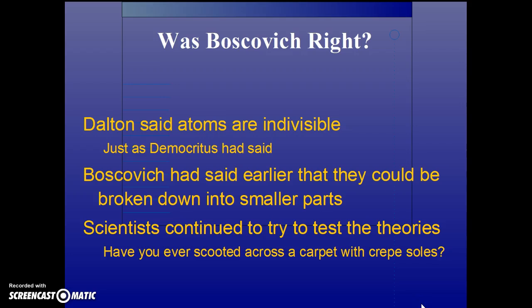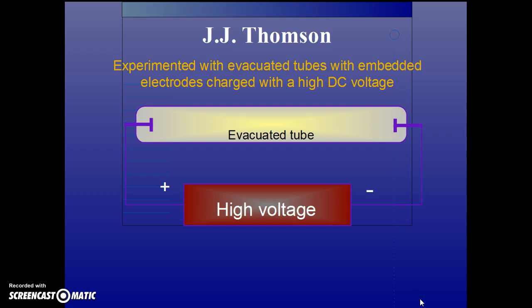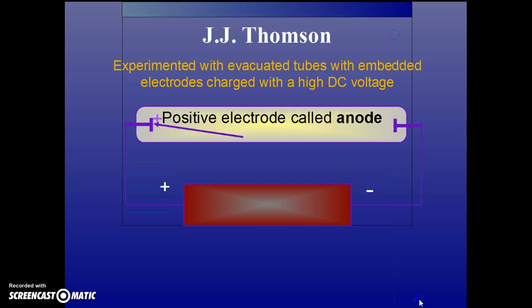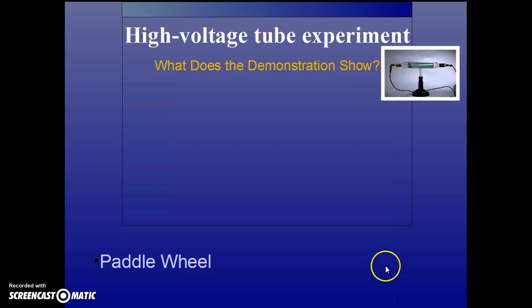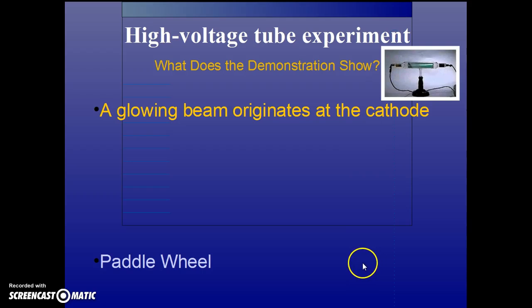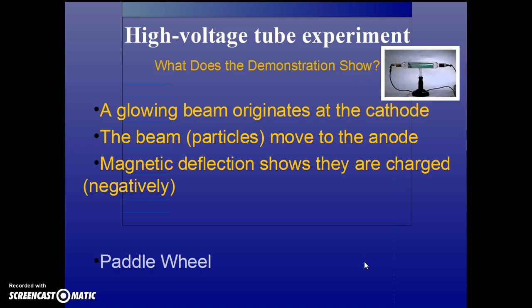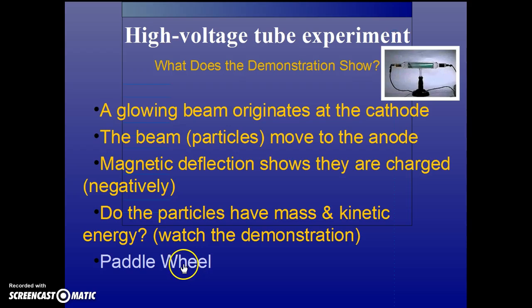Have you ever scooted across a carpet with crept soles? When you touch a doorknob, you get a shock, especially if it's a dry day. J.J. Thomson experimented with vacuum tubes. He passed a very high voltage through the vacuum tube, and he found the positive electrode he called an anode, and the negative electrode he called a cathode. If you find a Crookes tube, he found that there were particles flowing from the negative to the positive electrode. The glowing beam originates at the cathode and moves to the anode. If you take a magnet to it, you see that they are charged particles because they deflect. We can also see with the paddle wheel demonstration that they have mass and kinetic energy.